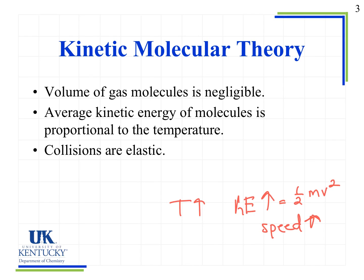The last tenet of the theory is that collisions are elastic. When a gas particle collides with another particle or with the wall of a container, no energy is lost. In real gases without the ideal behavior assumption, some energy would be lost — just as when any two objects come into contact, some energy is lost through friction or heat. But we assume that all collisions are elastic.